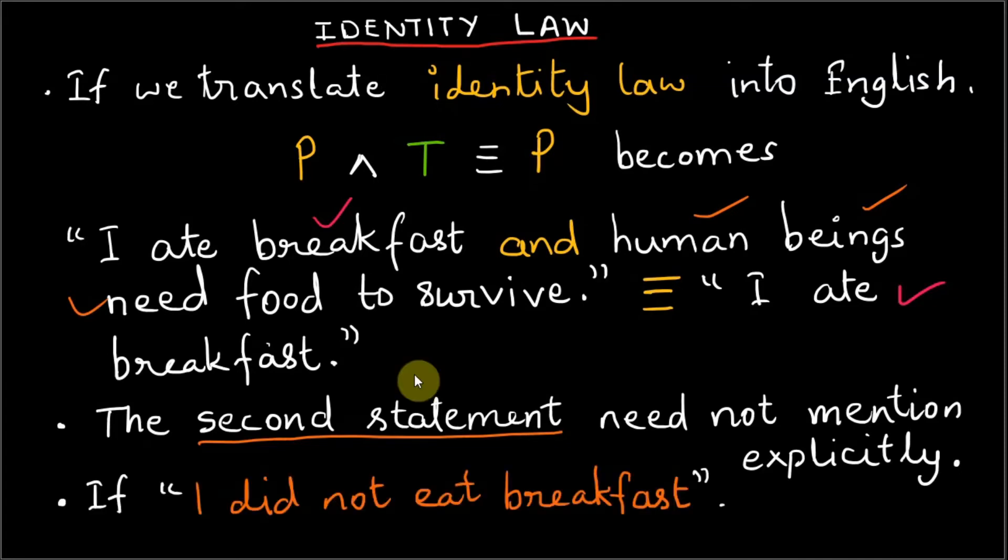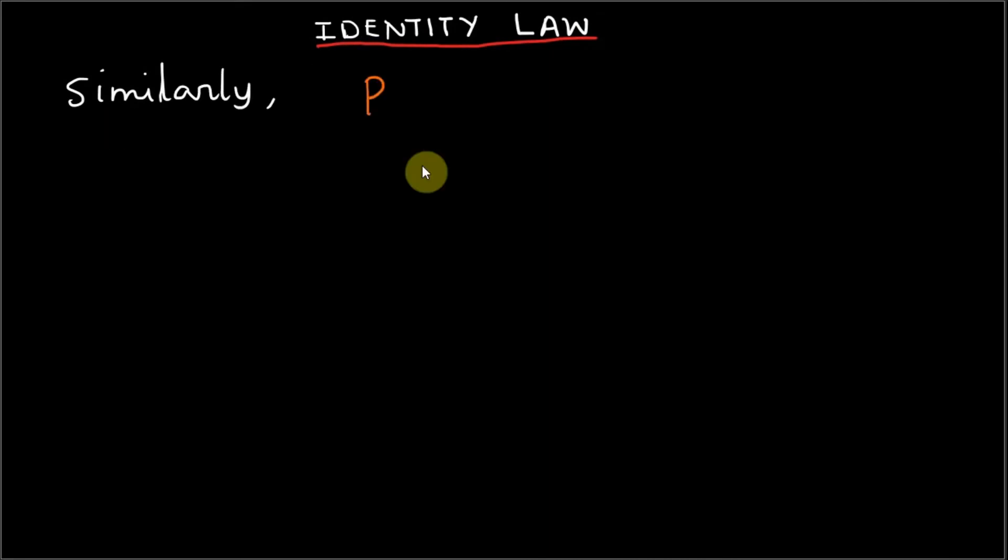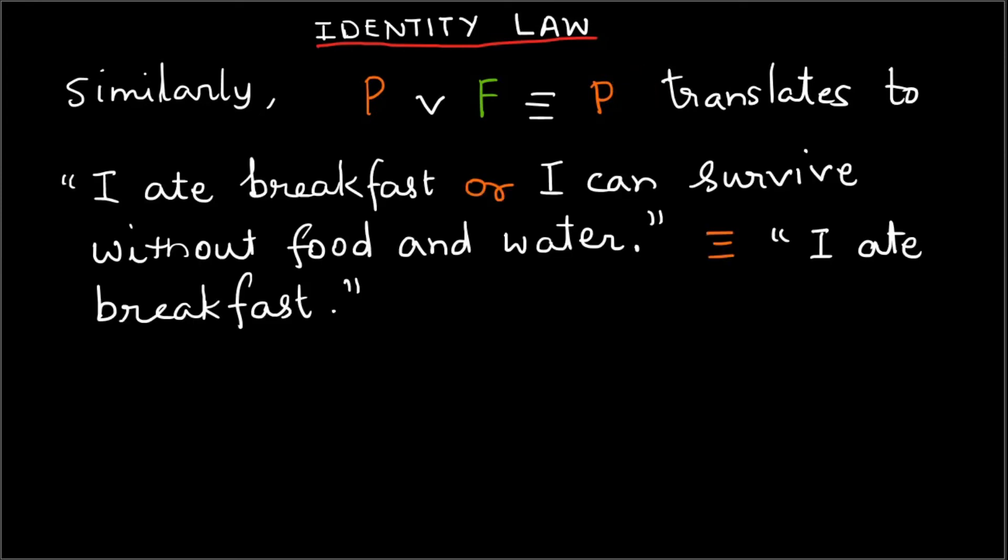If I did not eat breakfast, the second statement does not make a difference and the equivalence is true. Similarly, P or false is equivalent to P translates into 'I ate breakfast or I can survive without food and water', which is the same as 'I ate breakfast'. The false statement 'I can survive without food and water' is irrelevant.